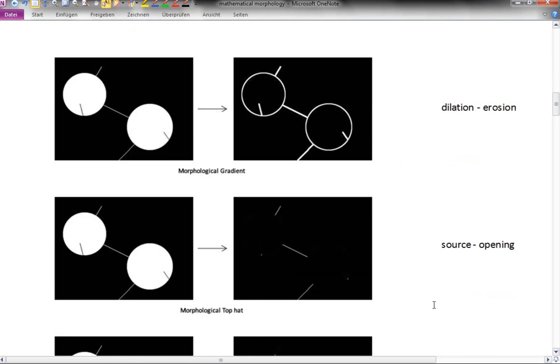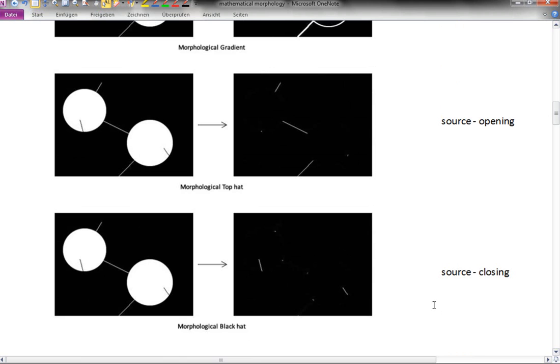Then there is a top hat filter, which is the source or the original image minus an opening. Or there is a black hat, which is the original filter minus a closed version. You see that the top hat brings out the thin white structures or the thin foreground structures, and the black hat brings out those places where the background is very thin.